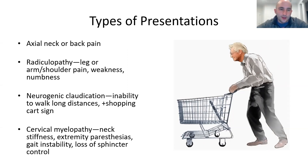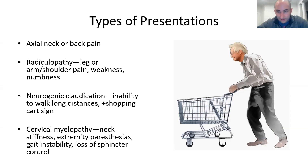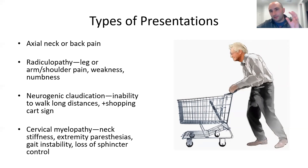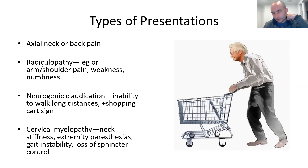They can also present with neurogenic claudication, seen primarily in the older population. They have a stooped card sign — they lean forward and feel a lot better. So the three flavors when evaluating these patients are: neck or back pain, radiculopathy (pain from a nerve in a distribution), or claudication in the lumbar spine. In the cervical spine we have something a little more dangerous: cervical myelopathy — pressure on the spinal cord.